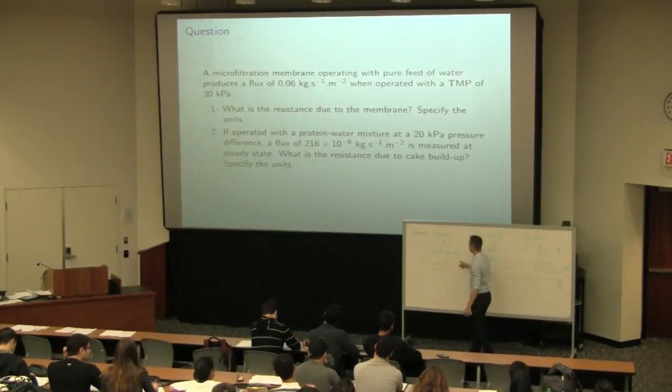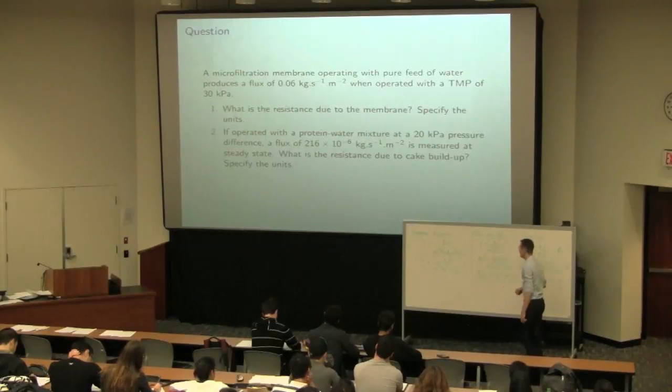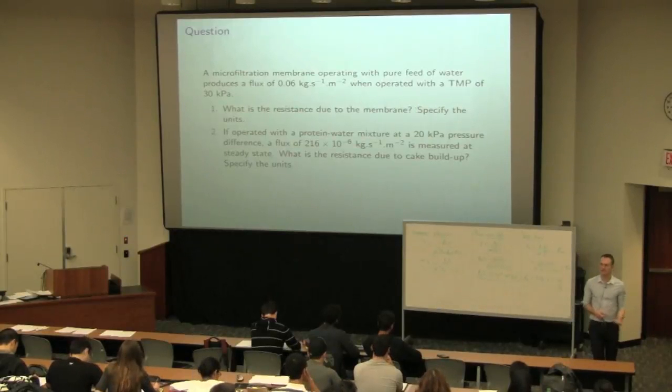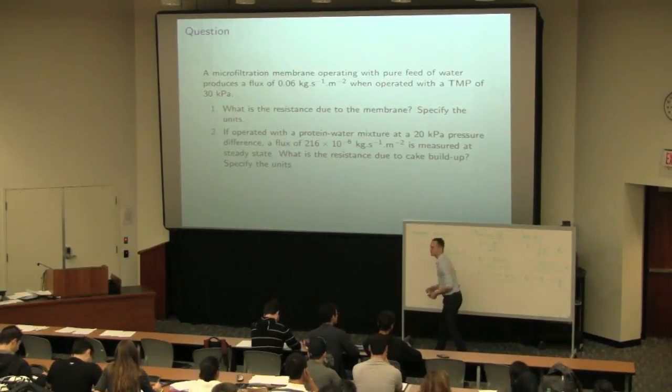So what we did yesterday is we said our numerator is our driving force here, delta P, and our denominator is essentially the resistance. So flux is equal to driving force divided by resistance. We see this all the time in electrical circuits.